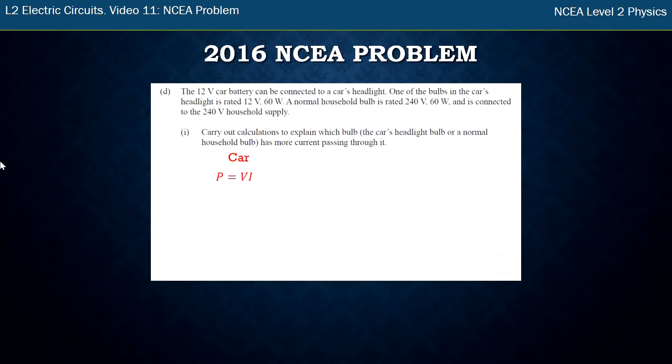For the car I've got the power formula rearranged to find I. Put my numbers in I get 5 amps. The house did the same thing. Put my numbers in I get 0.25. Obviously the car has 5 amps is more. More current. That one's easy.